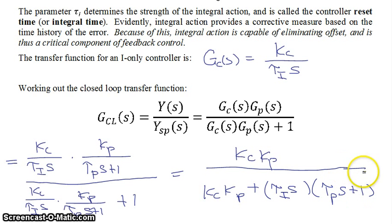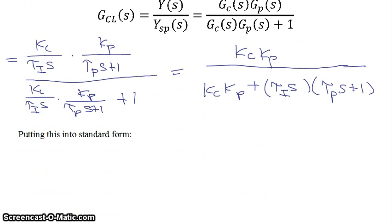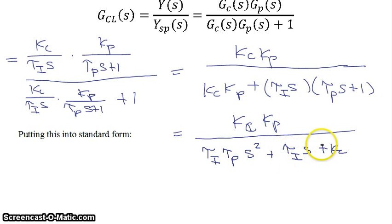Now if we work that out, what that polynomial there in the denominator is equal to, what we get is equal to kc times kp in the numerator, all divided by—and then multiplying this all out—what we get is tau i tau p times s squared plus tau i times s plus kc times kp.